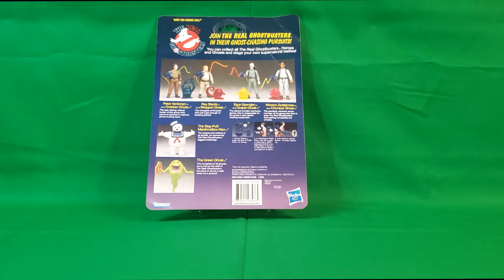Egon Spangler and Gulper Ghost, the absent-minded electronic genius who is responsible for the group's zany ghost-chasing equipment. Winston Zedmore, which the Real Ghostbusters are notorious for spelling the last name wrong. It's actually Zedmore, not Zedemore. And Chomper Ghost, the practical, common-sense member of the group who tries to keep the real Ghostbusters from getting completely out of hand. You've got the Stay Puft Marshmallow Man, the largest and wildest of all ghosts. He represents the real Ghostbusters' biggest challenge. And then you've got the Green Ghost, the hungriest of all ghosts. He is now on the side of the real Ghostbusters. No pizza or donut is safe when he's around.